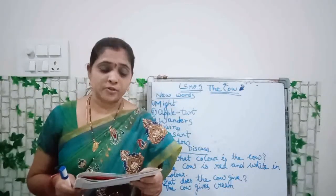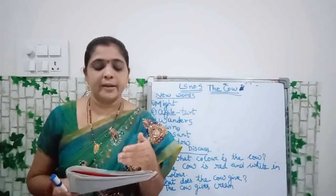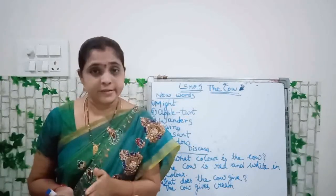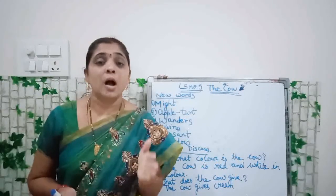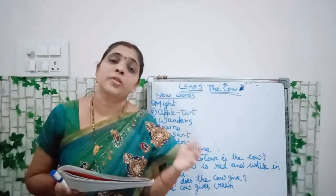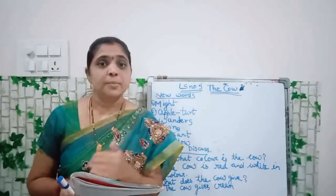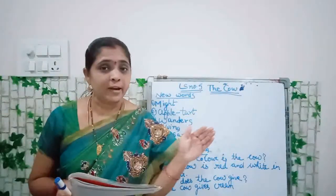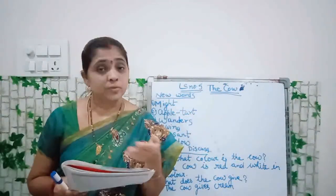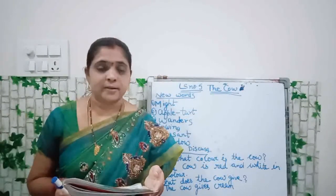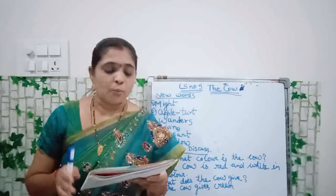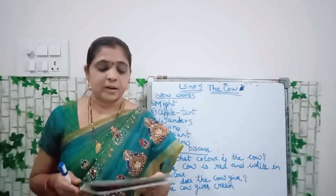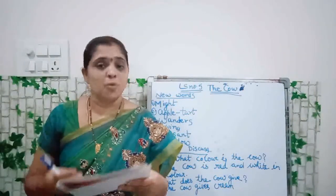She wanders lowing here and there, and yet she cannot stray. Who is 'she' here? The cow. The cow wanders — lowing, that means making sound. The cow moves from one place to another by making moo sounds, and cannot stay at one point. Where the cow is wandering — it is wandering in the pleasant open air. Pleasant open air means happy, where she feels happy. The pleasant light of day means morning time, daytime.